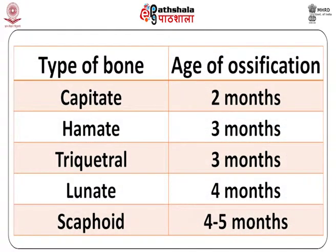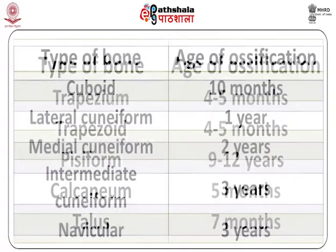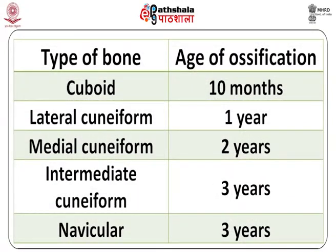For the carpal (wrist) bones: the capitate ossifies at 2 months, hamate at 3 months, triquetral at 3 months, lunate at 4 months, scaphoid at 4 to 5 months, and trapezium and trapezoid also at 4 to 5 months. The pisiform appears at around 9 to 12 years. For the foot bones: calcaneum at 5 months, talus at 7 months, cuboid at 10 months, lateral cuneiform at 1 year, medial cuneiform at 2 years, and intermediate cuneiform and navicular at 3 years.